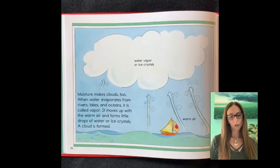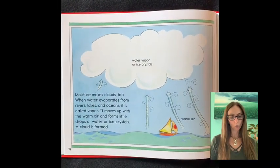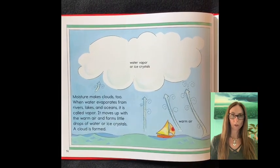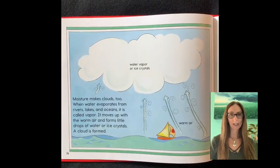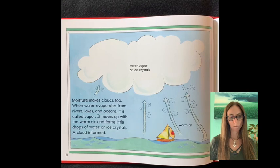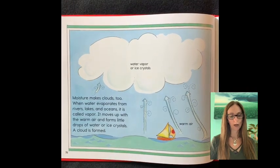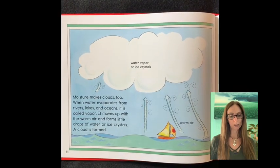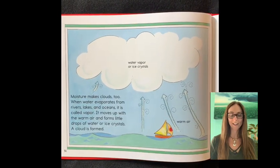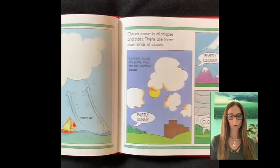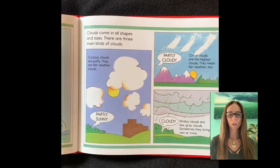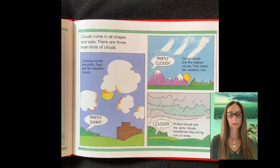Moisture makes clouds too. When water evaporates from rivers, lakes, and oceans, it's called vapor. It moves up with the warm air and forms little drops of water or ice crystals. A cloud is formed.